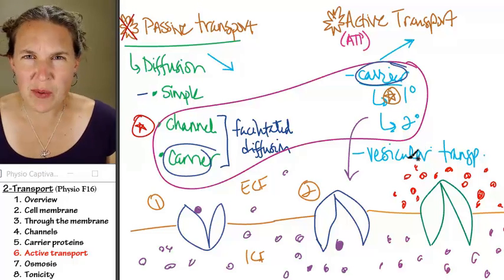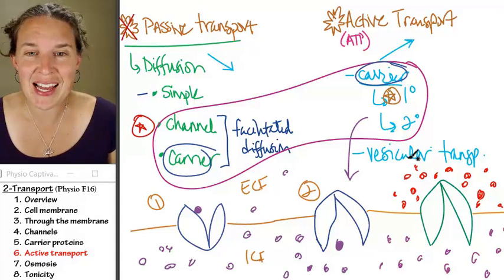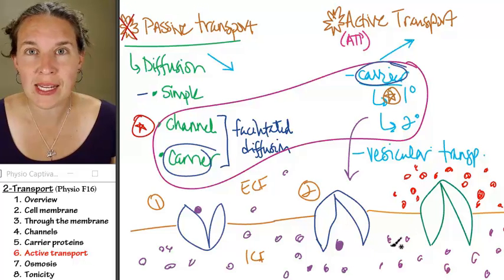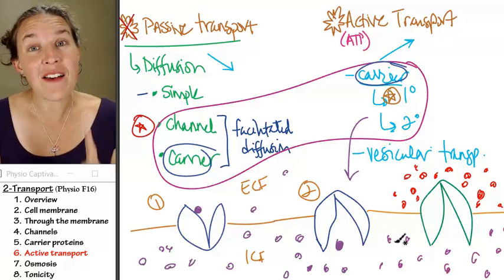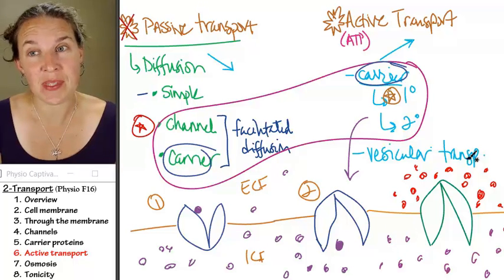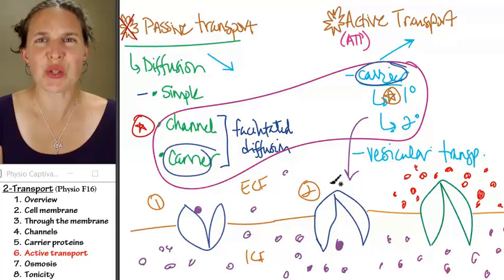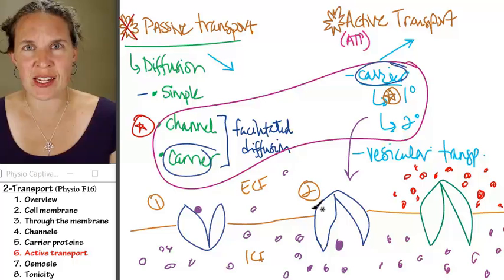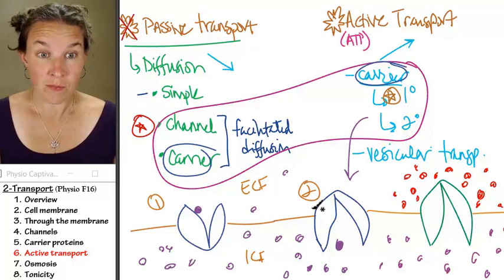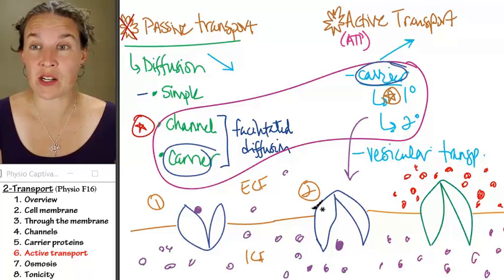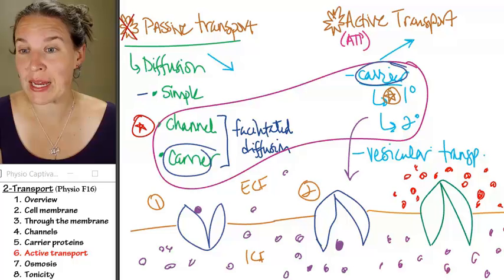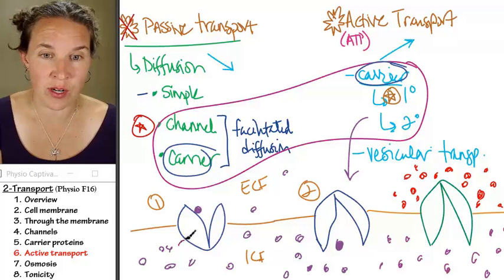Let's talk about primary active transport first because we drew a picture of it right here. Remember, all we have to add to this picture is some way for this transporter to use energy to make that happen. The most common form of energy that your body has going on for it is ATP.